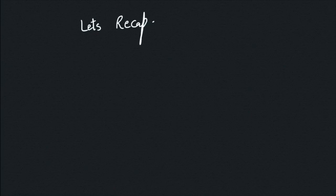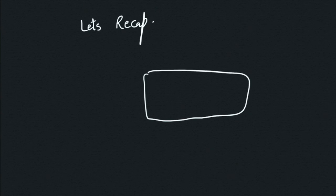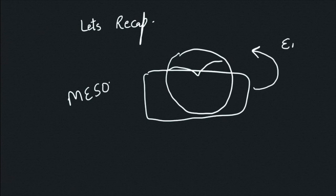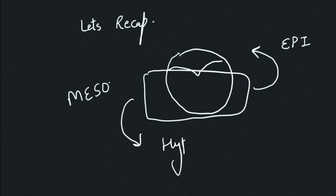The middle ear is the space inside of the ear which is cuboidal in shape — a room-like structure which has anterior, posterior, medial, lateral, a roof, and a floor. When we examine the middle ear, what we see through the tympanic membrane is what we call the mesotympanum. The part above the mesotympanum is the epitympanum, and the one below is the hypotympanum.